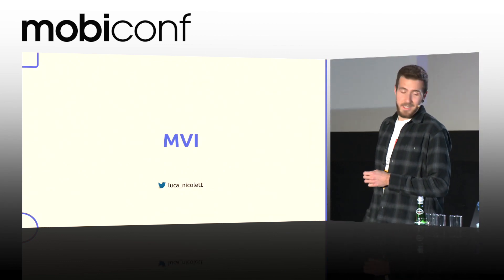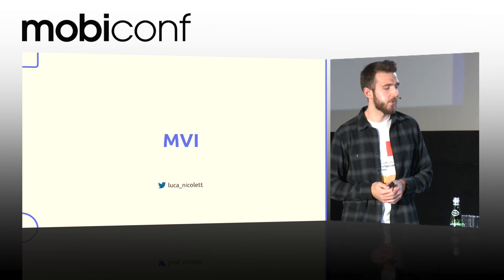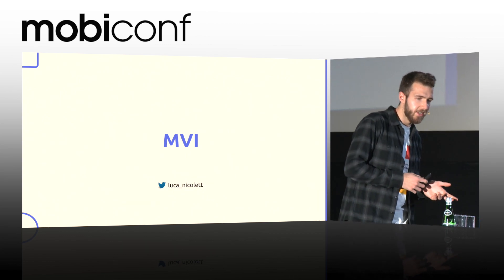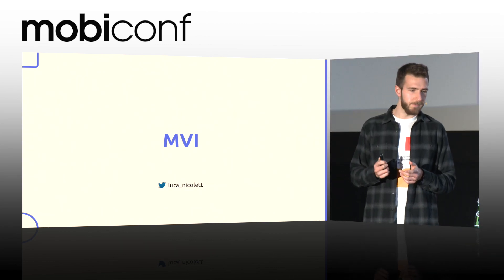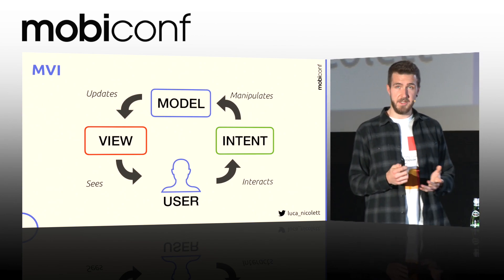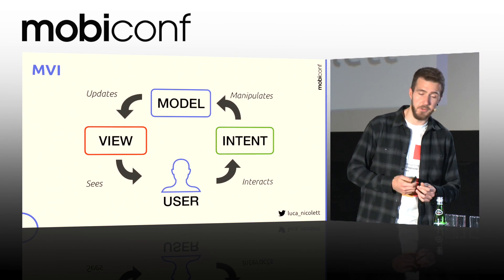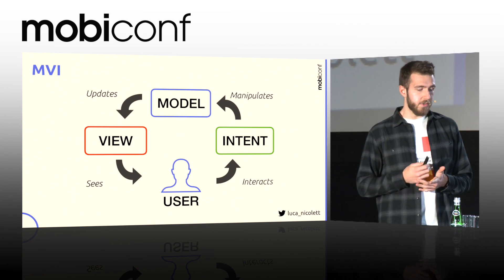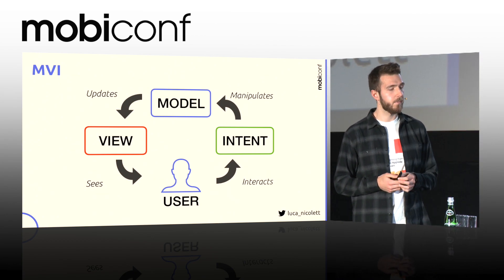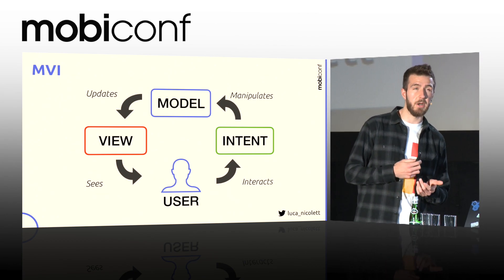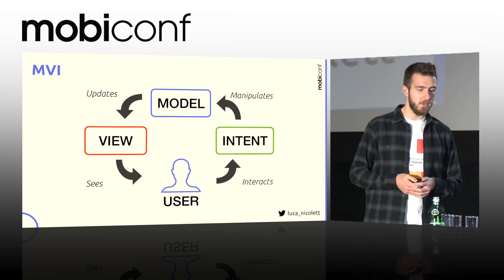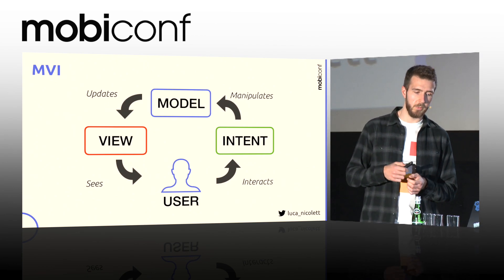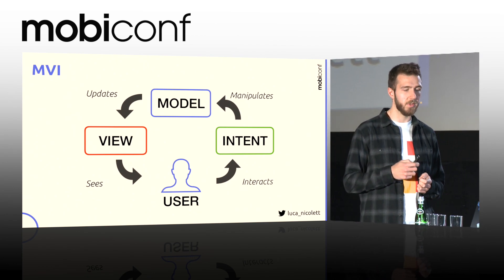MVI is an architectural pattern which allows us to consider an application as a unidirectional data flow, which has no start and can be considered as a loop. For now, let's assume that it has a beginning point: the user interacting with the UI and producing intents. Those intents, through the business logic, manipulate the model of our application and update it. The updates of the model are then reflected on the view component, which is rendered back to the user, completing the loop.